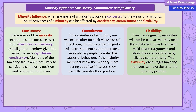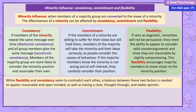The final factor, flexibility, may seem a little counterintuitive considering consistency is important, but being somewhat flexible demonstrates that the minority is reasonable and open to valid counter-arguments. Members of the majority won't be willing to engage with a minority they see as dogmatic. As a minority group wants to persuade members of the majority to be flexible and move closer to their position, they'll be more successful if they demonstrate they're willing to do the same.